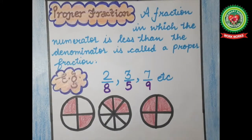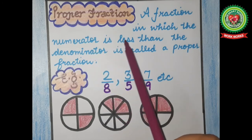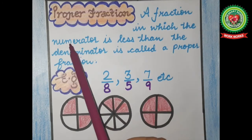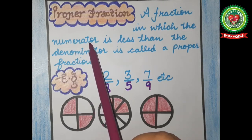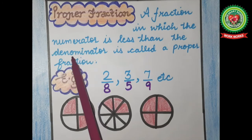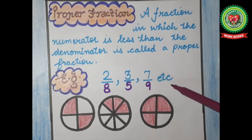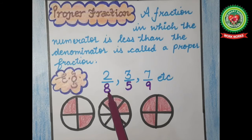Number two type is proper fraction. The definition of proper fraction is: a fraction in which the numerator is less than the denominator is called a proper fraction. That means the upper number will be less than the lower number — the number above the line will be smaller and the number below the line will be greater. For example: two upon eight, three upon five, seven upon nine, etc. Numerator two is less than denominator eight; three is less than five; seven is less than nine. So these all are proper fractions.